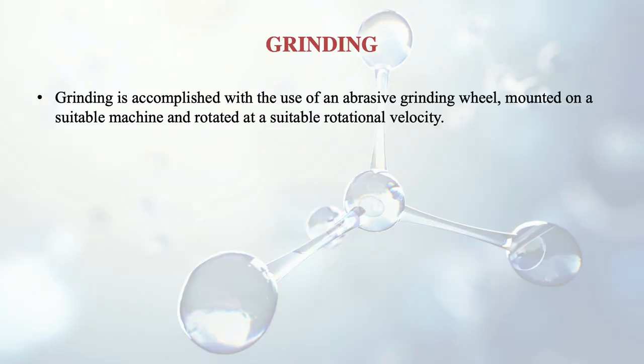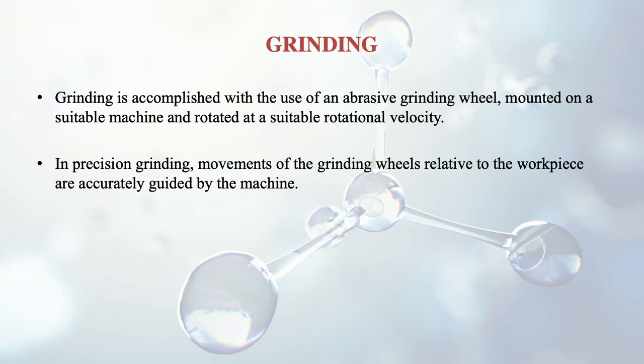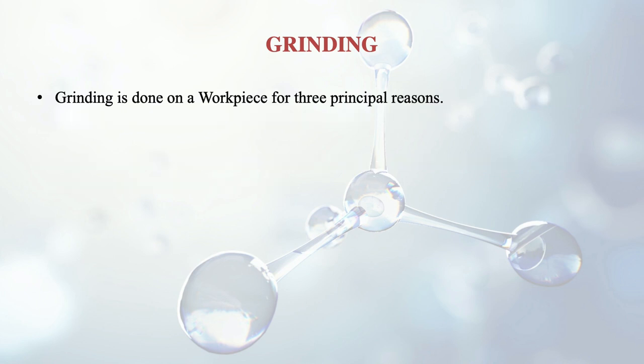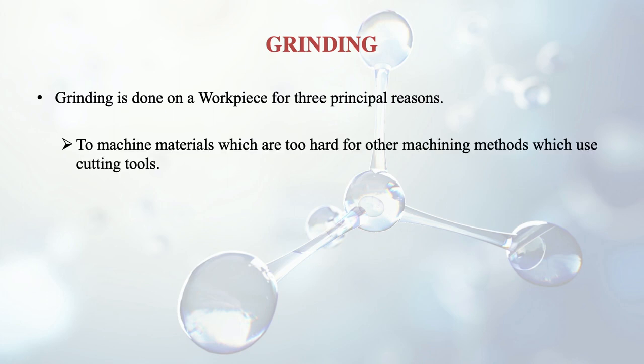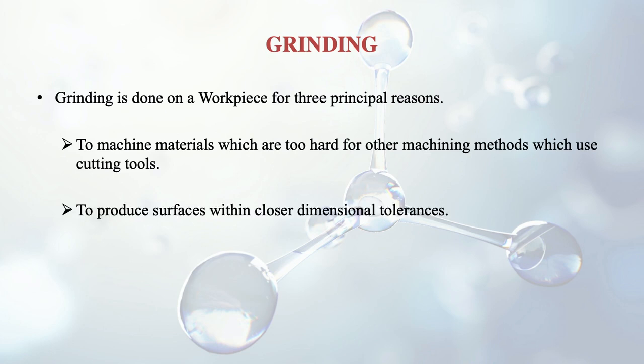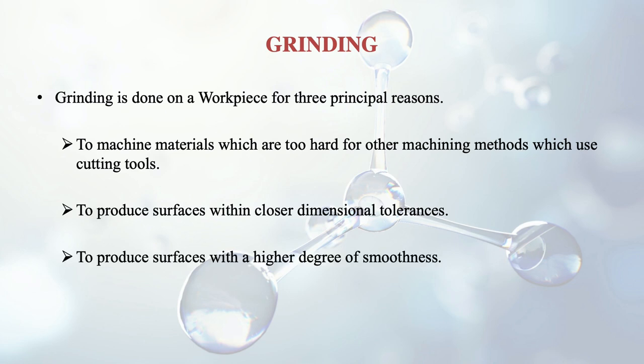Grinding is a very important process. It is accomplished with the use of an abrasive grinding wheel mounted on a suitable machine and rotated at a suitable rotational velocity. In precision grinding, movements of the grinding wheel relative to the workpiece are accurately guided by the machine. Grinding is done on a workpiece for three major reasons: to machine materials which are too hard for other machining methods; to produce surfaces within closer dimensional tolerances; and to produce surfaces with a higher degree of smoothness. Material removal can be in the range of microns.